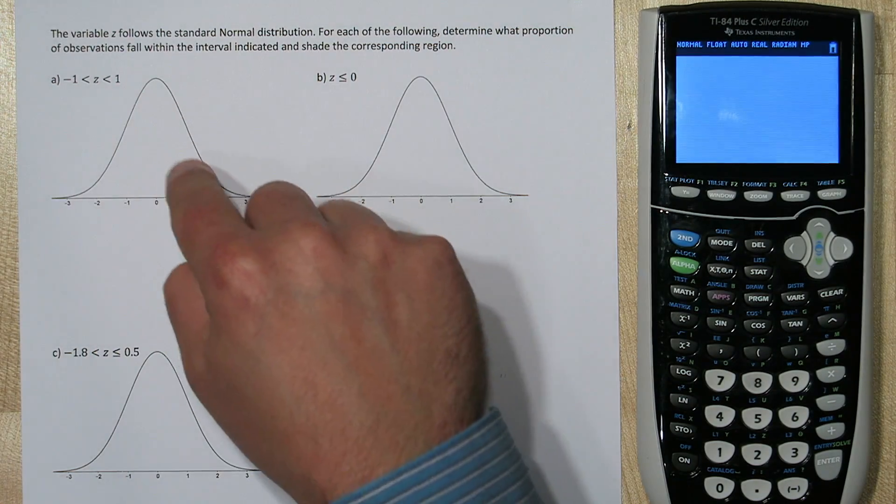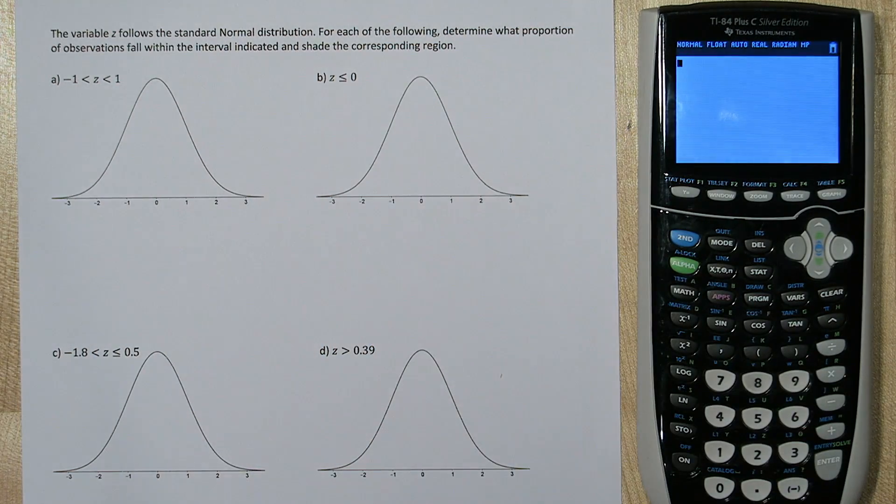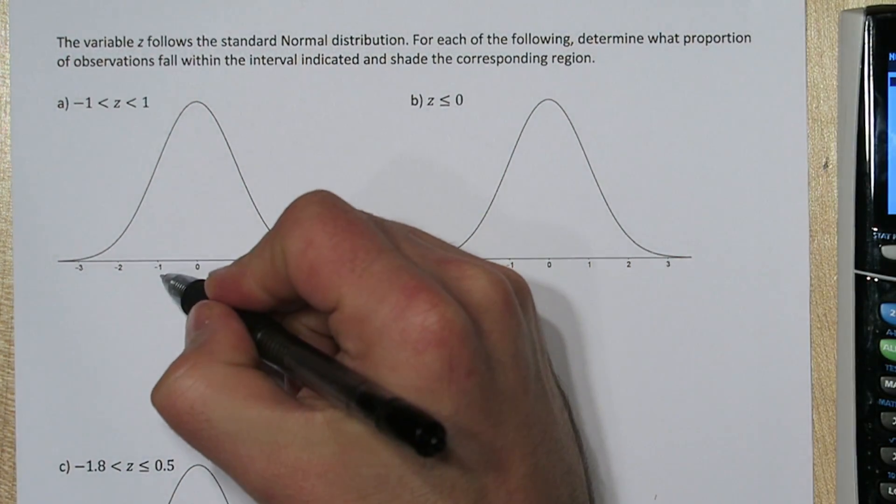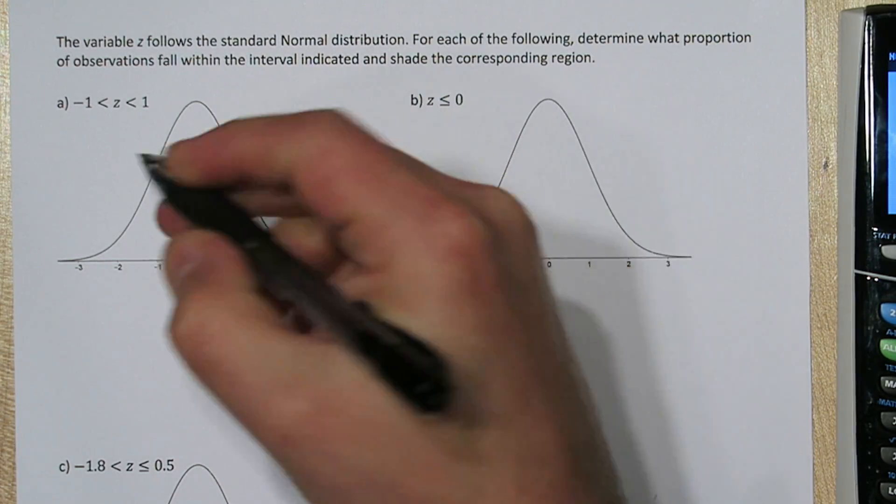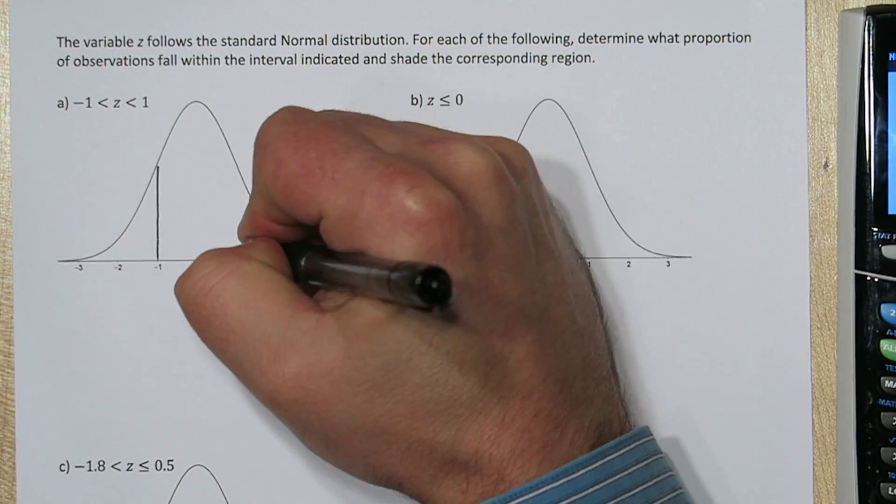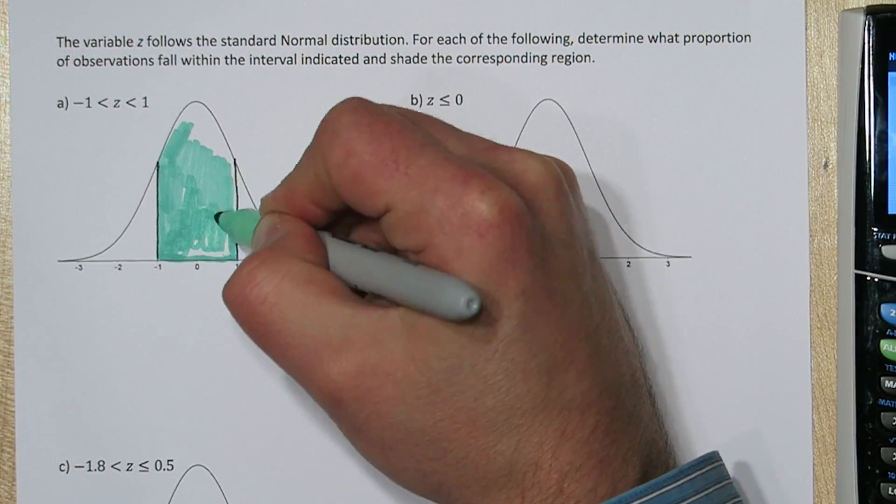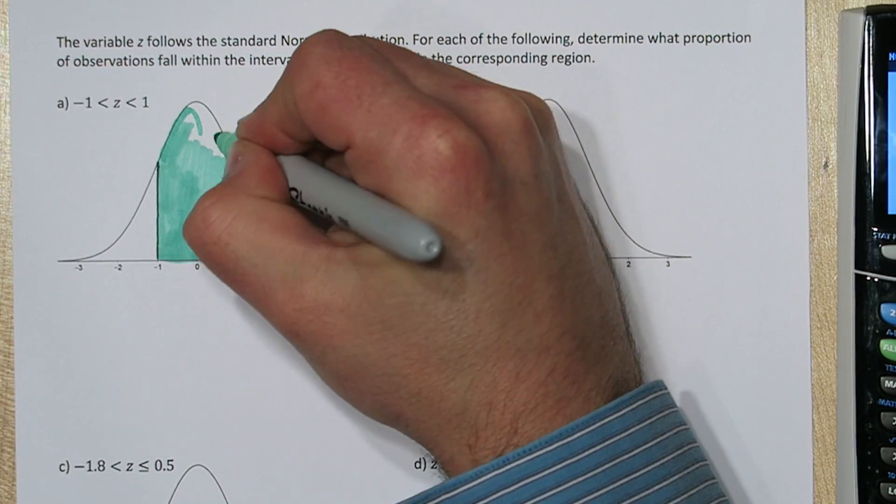The area under each of these curves is exactly 1. In fact, the area under any density curve is exactly 1. We're going to try to find the area between negative 1 and 1. Just by looking at that area, you might already have a guess. If the total area is 1, what area is this green shaded region?